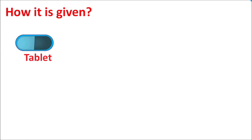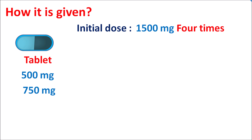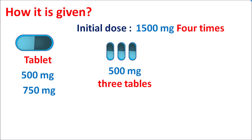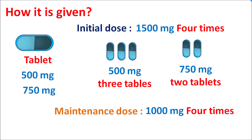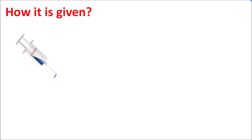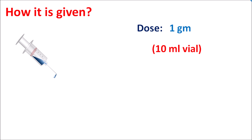How is it given? This drug is available as a tablet at different strengths such as 500 mg and 750 mg. The initial dose is 1500 mg given 4 times daily, so the total daily dose is 6 grams. This 1500 mg dose can be given as three 500 mg tablets four times daily, or as two 750 mg tablets four times daily. The maintenance dose is around 1000 mg given 4 times daily. It is also available as an injection given either IV or IM. The dose is 1 gram (10 ml vial) but the injection rate should be less than 3 ml per minute. The upper limit of this dose is 30 ml, that is 3 grams per day.